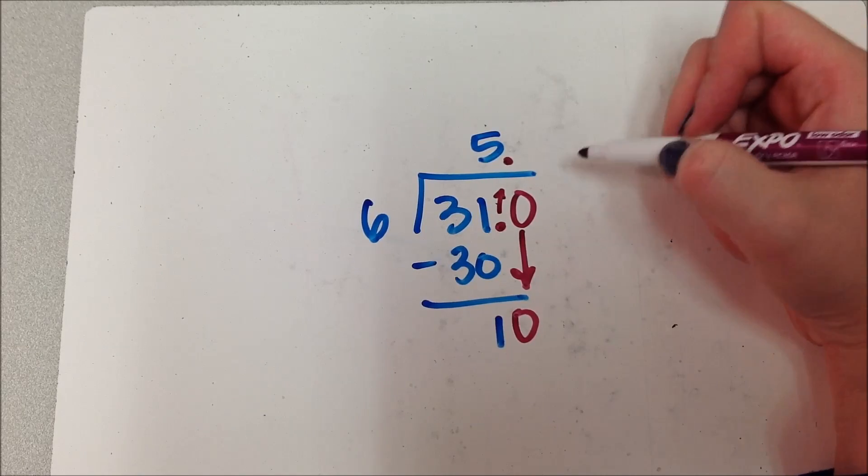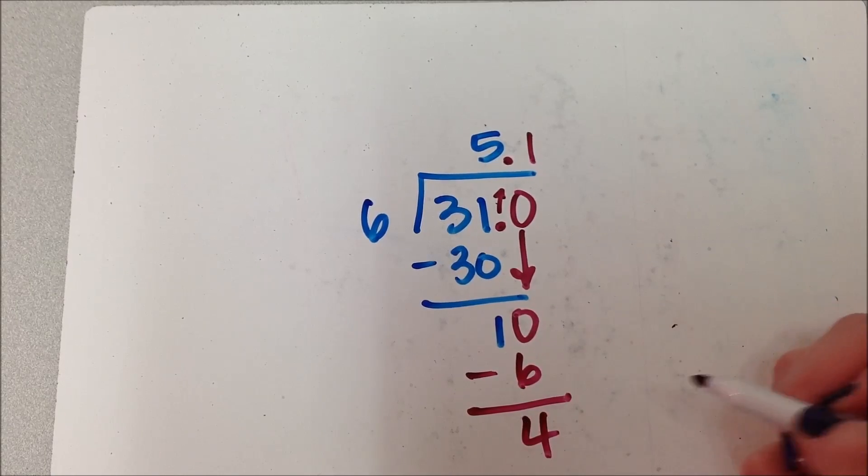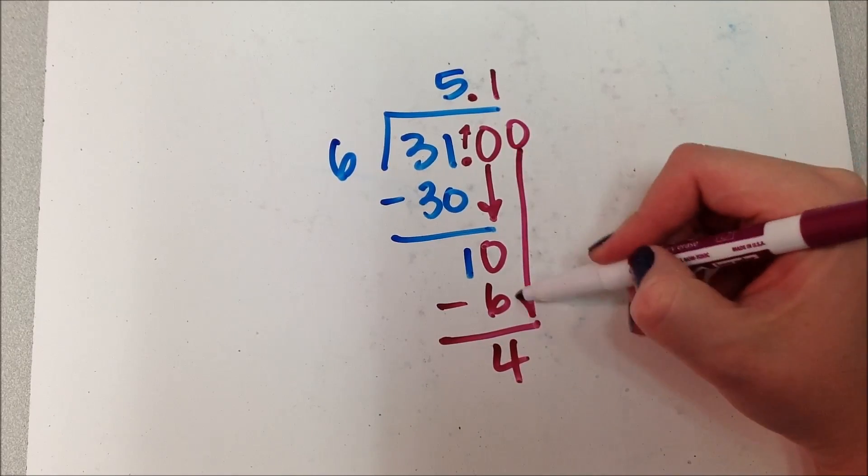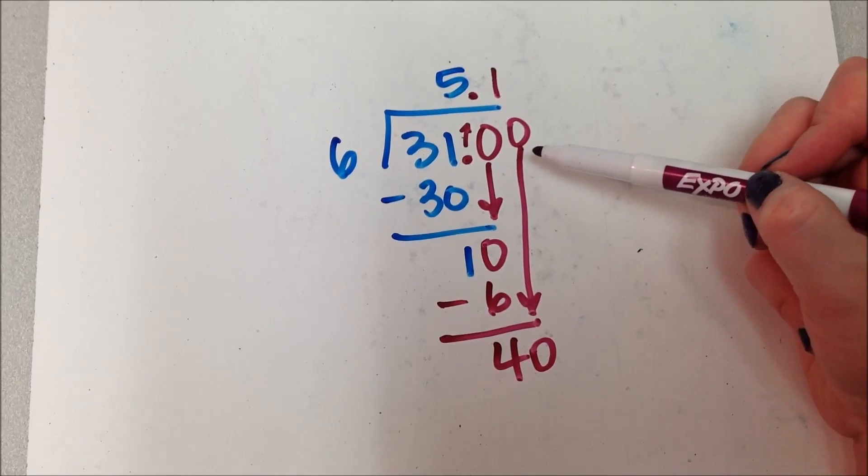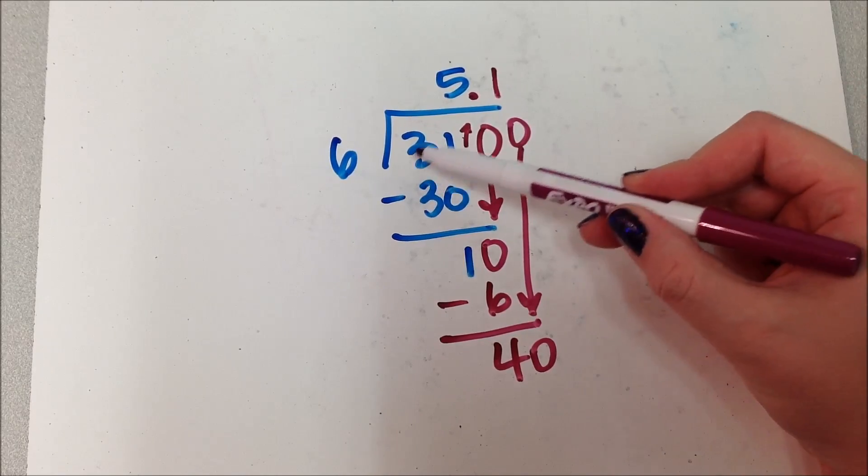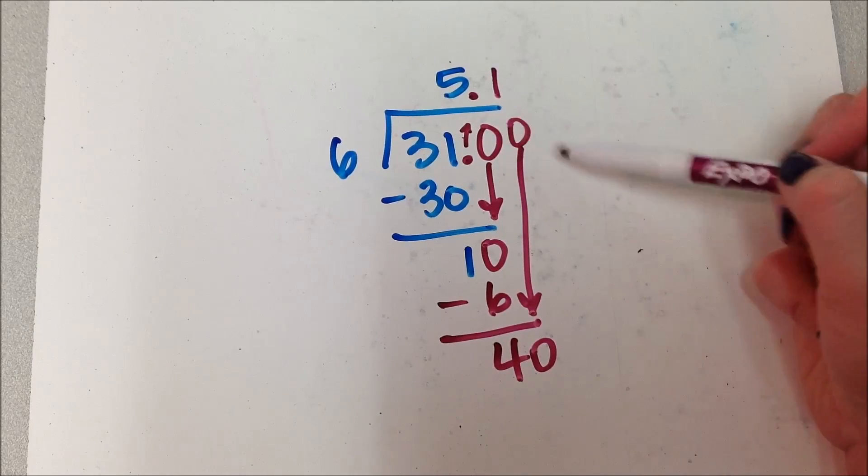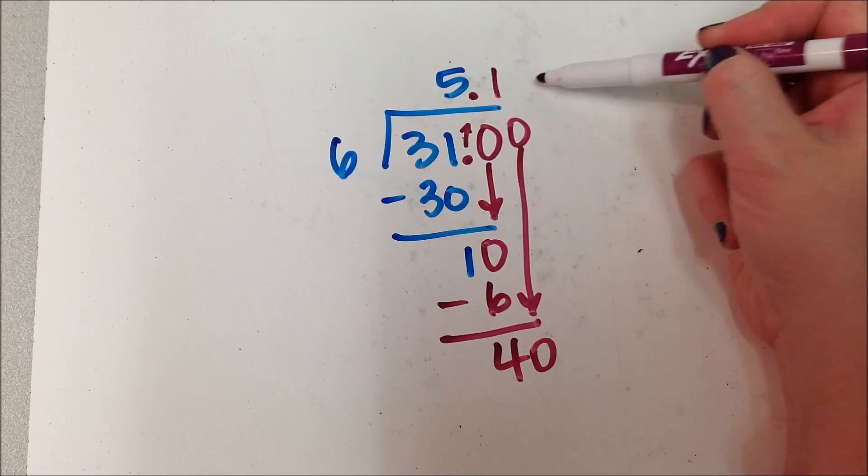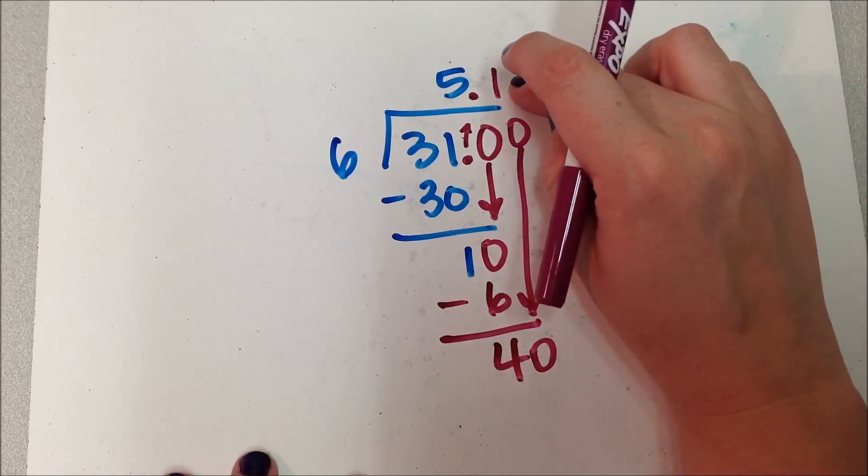Well, it goes one time, right? And I have 4 left over. Oops, that's still a remainder. I'm going to add in another 0 and drop it down. Because see, these 0s that I'm adding in up here are those unnecessary 0s. So it's not like they're changing the size of this 31. This is still 31, I just have a bunch of 0s after it now.